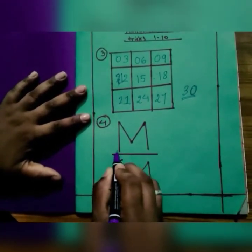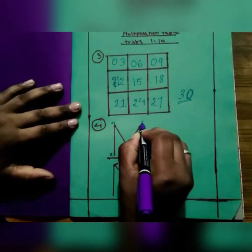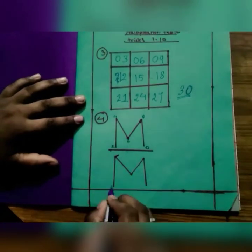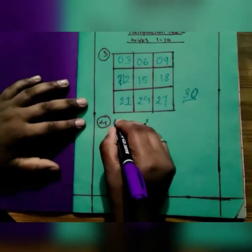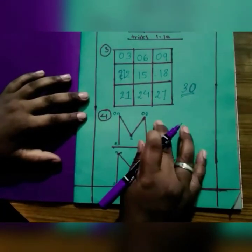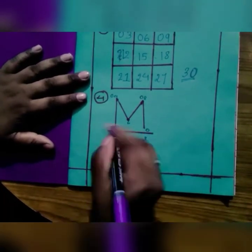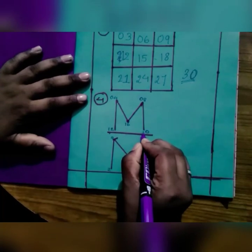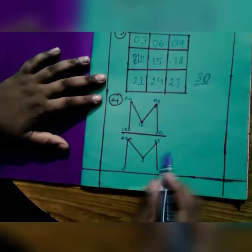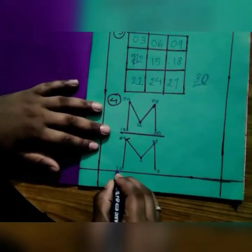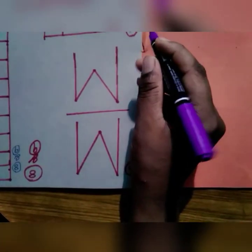Now we do the table of 4. First we write the table of 2: 2, 4, 6, 8, 0, and again 2, 4, 6, 8, 0. In the first row put zeros. In the second row write 1, then 2. Then write 2 again, and in the last column write 3, and at the last write 4. Now we get the table of 4.